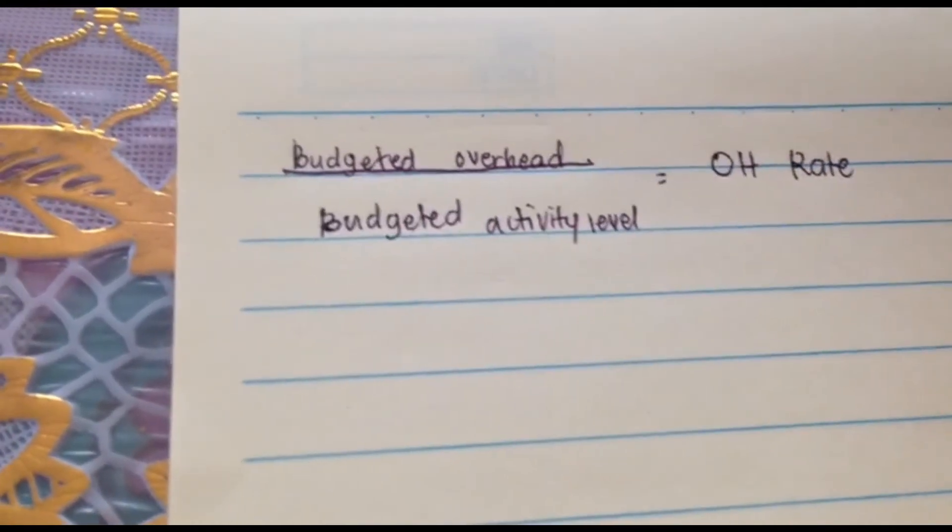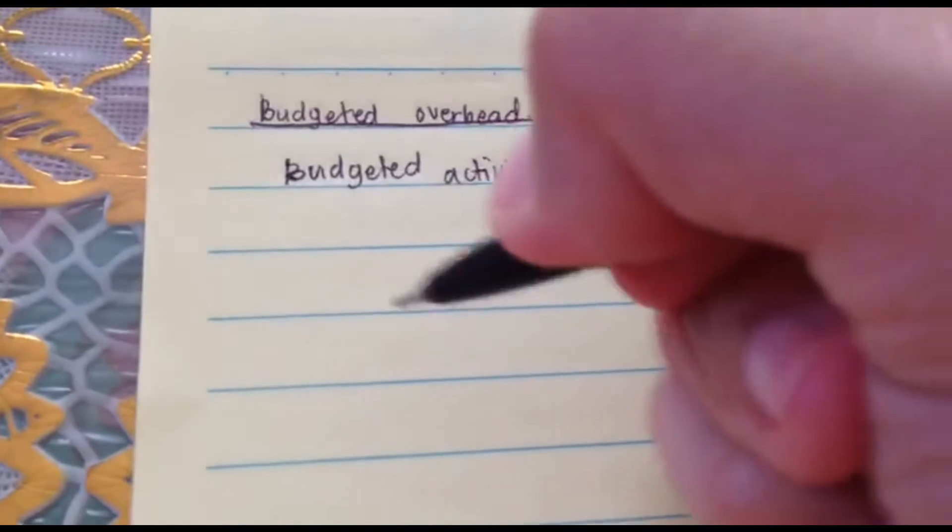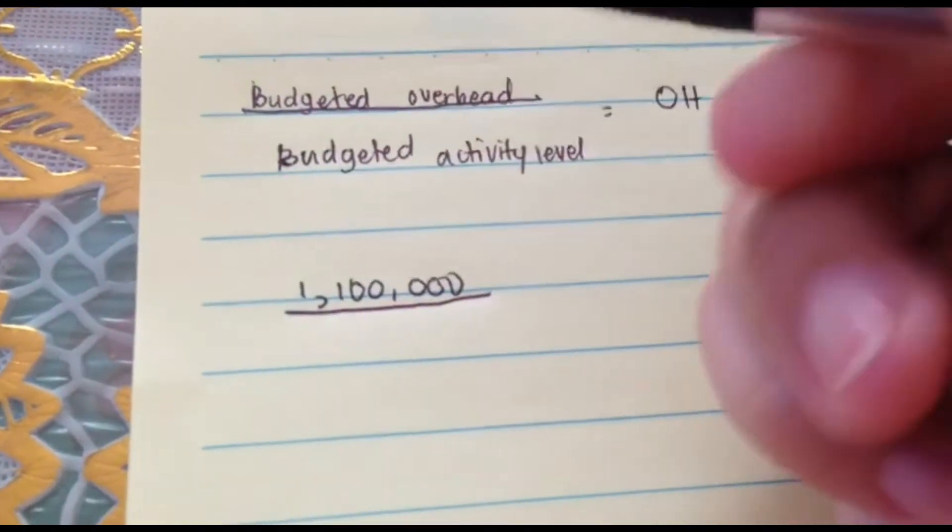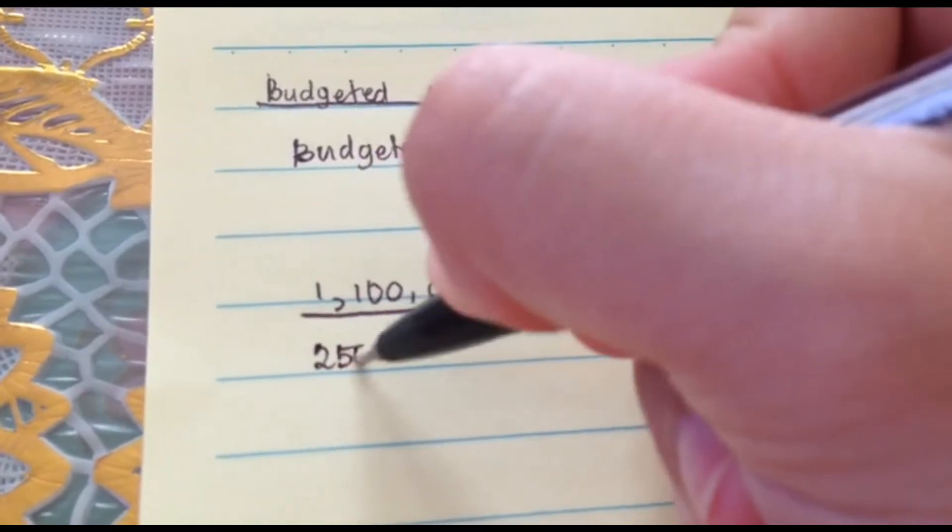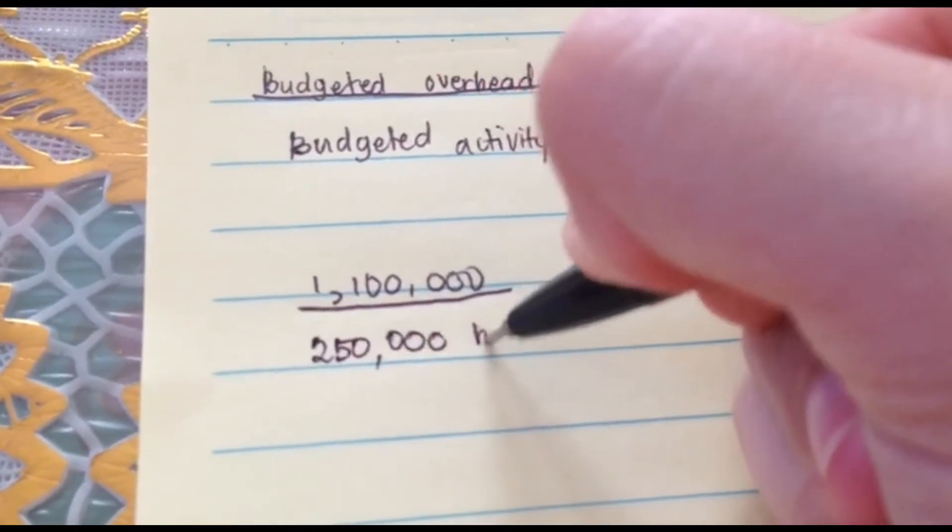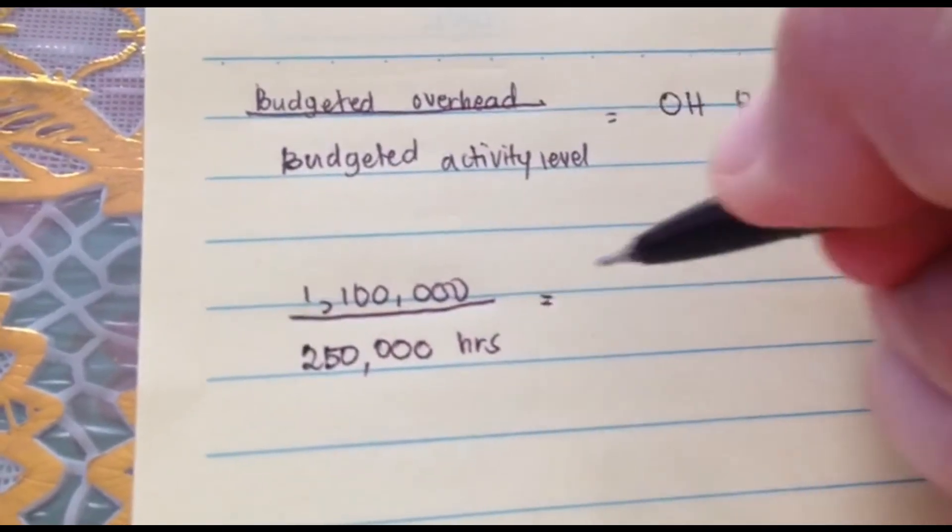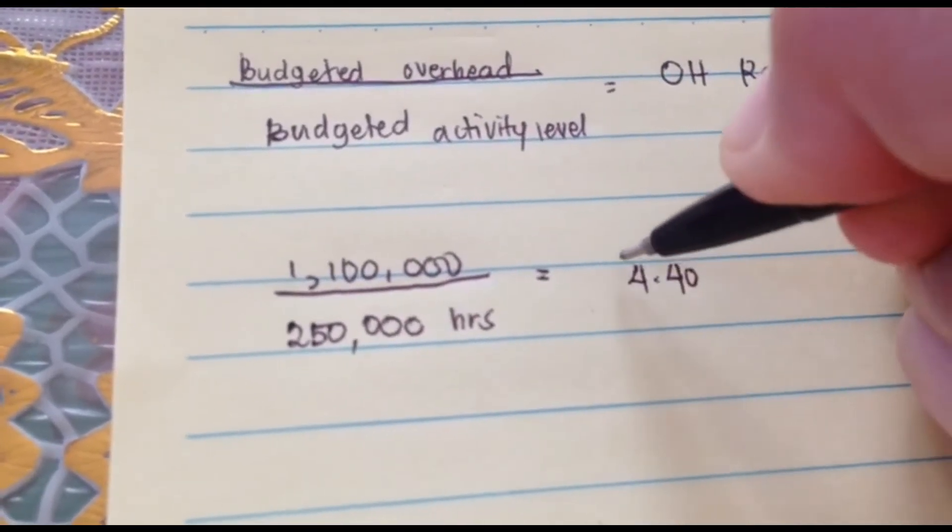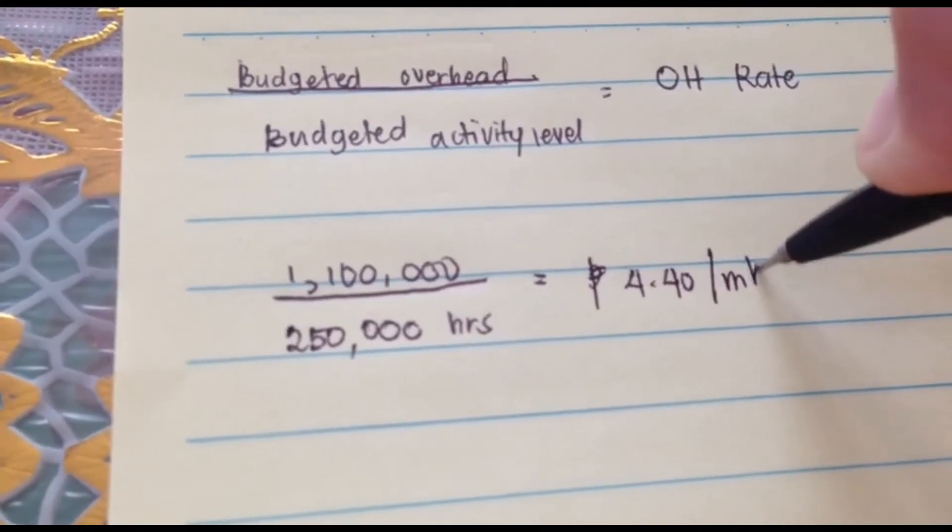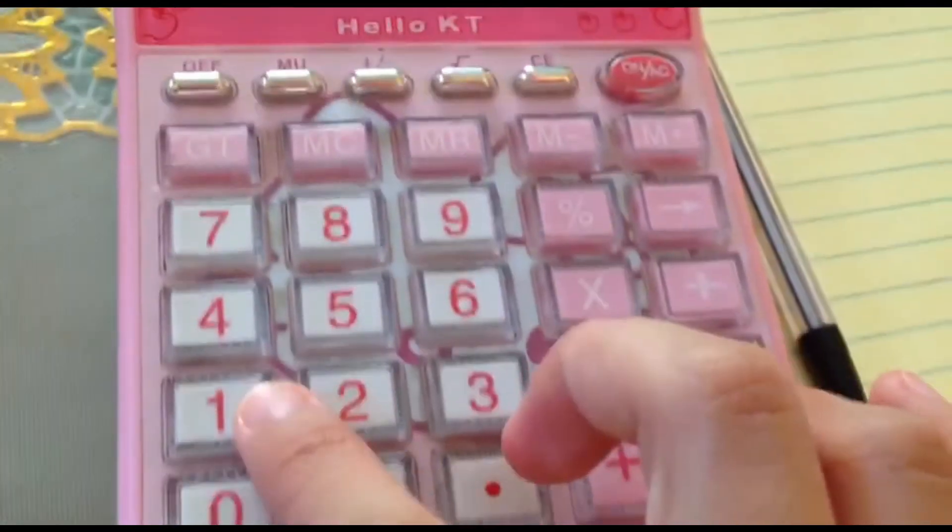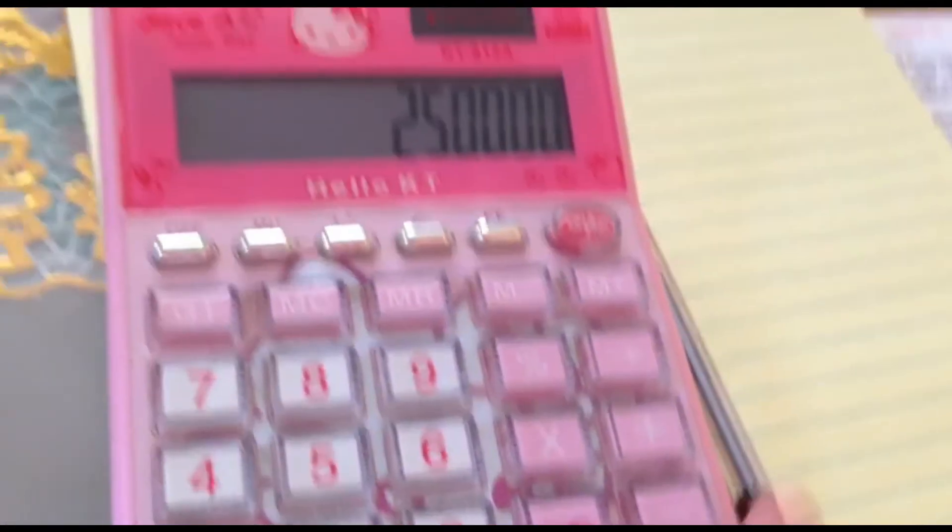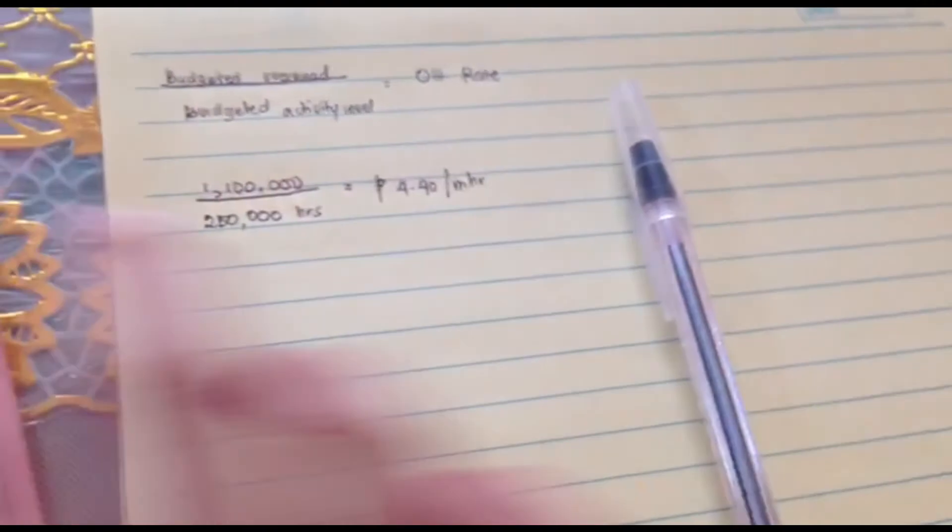What is our estimated? We have 1.1 million. 1,100,000 over the estimated 250,000 hours. That is equal to 4.40 pesos per machine hour. So, 1.1 divided by 250, 4.40 per machine hour.